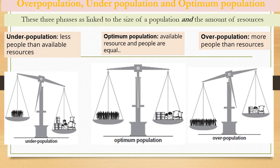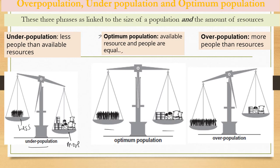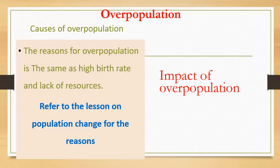Looking at the definitions: under population is when there are fewer people than available resources — the resources are more than the people. Optimum population is when available resources and people are balanced — they are equal. Over population is when the people are more than the resources available within that region.